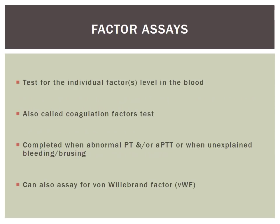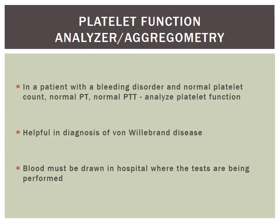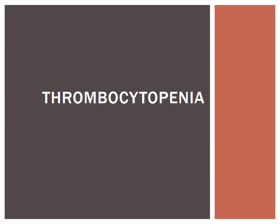When evaluating a patient for bleeding, a factor assay looks for individual factors in the blood. These coagulation factor tests are done when you have an abnormal PT or APTT, or when you cannot explain bleeding or bruising. There are also special assays for von Willebrand factors. A platelet function analyzer is performed for patients with a bleeding disorder but normal platelet count, normal PT, and normal PTT — to assess platelet function and is useful for von Willebrand disease. This test must be immediately brought to the lab to prevent excess coagulation.